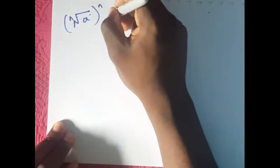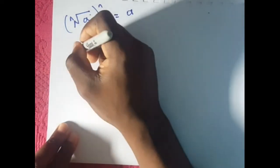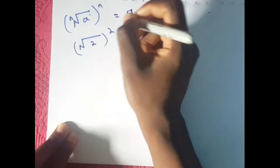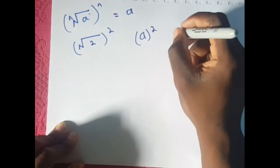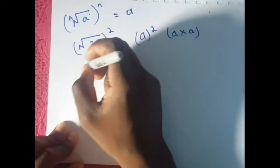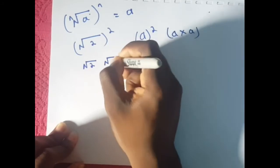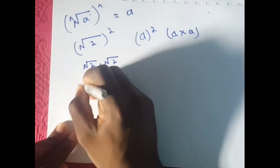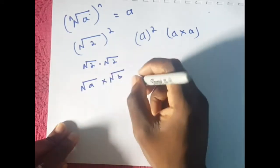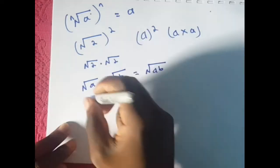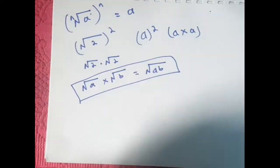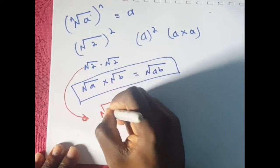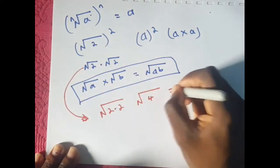Now let's get into some surds. Surds have some laws of their own, and some laws shared with indices. The first rule: the square root of a, raised to the power of n, is equal to a. This is the same as saying the square root of 2 all squared. If you have a squared, it is a times a — so the same thing goes here: root 2 times root 2. There's a property of surds where root a times root b can be rewritten as root ab. So root 2 times root 2 becomes root 4, which equals 2, proving the first rule.